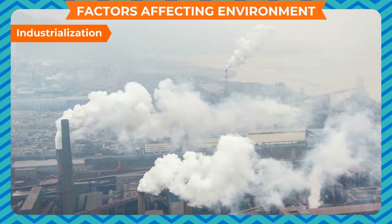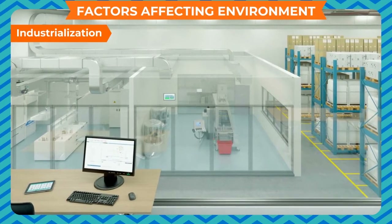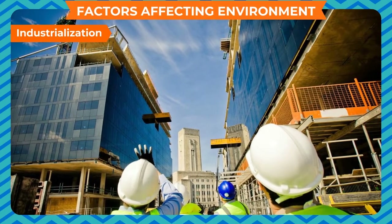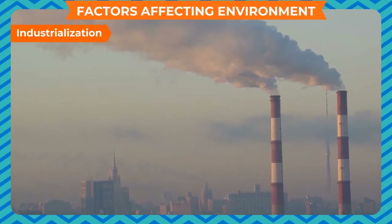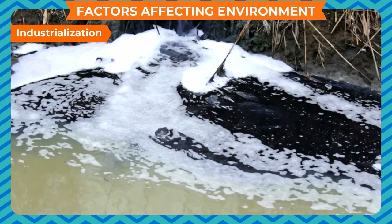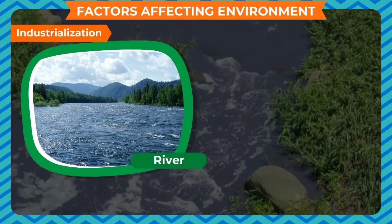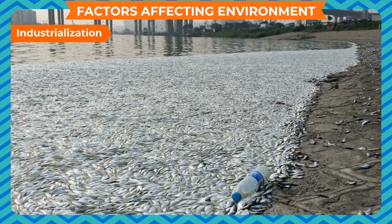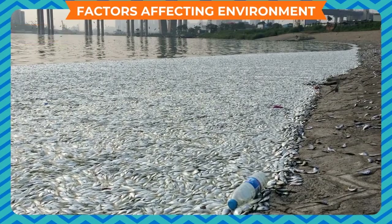Industrialization not only improves our living standard but also adversely affects our environment. The exhaust gases released by industries cause air pollution. The toxic chemicals and polluted water from industries disposed into water bodies like rivers and ponds make them polluted, which affects aquatic animals and human beings too.